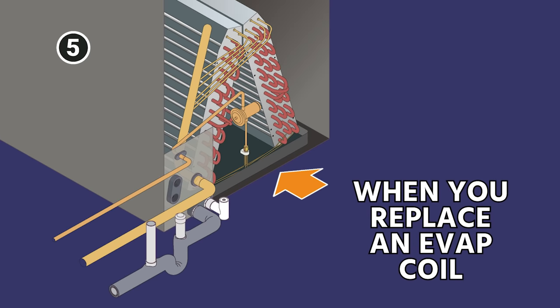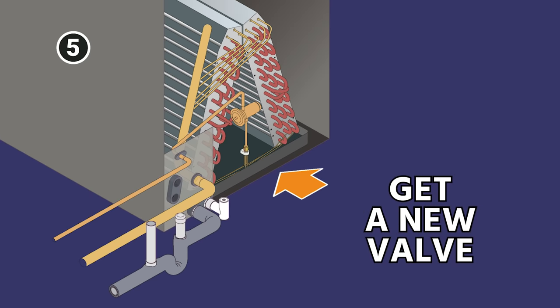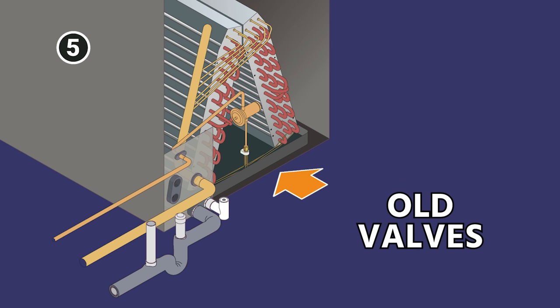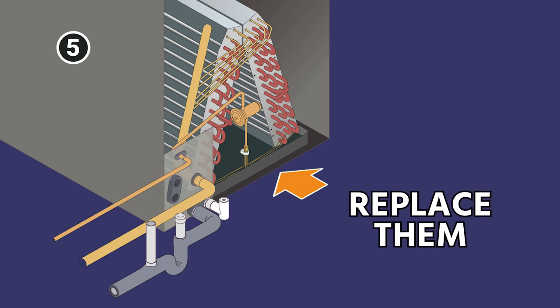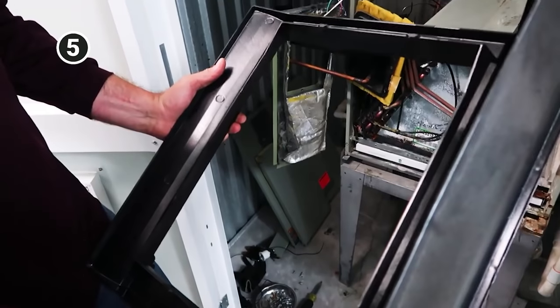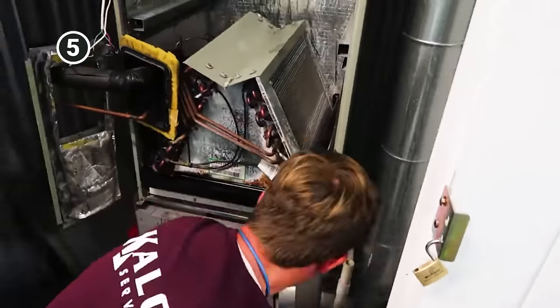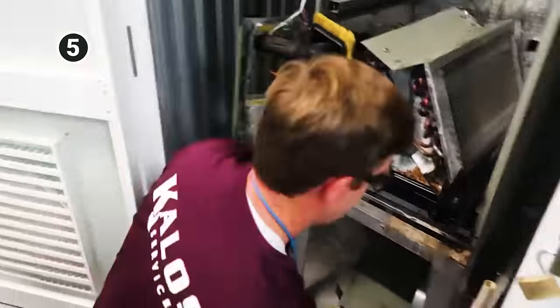I always suggest when you're going to replace an evaporator coil, just go ahead and get a new valve. If it doesn't come with one, it just makes good sense. Handling an old valve and trying to reinstall it, you're often going to break it, so it just makes good sense to go ahead and replace that. If you can replace a new drain pan, that also makes a lot of sense. Some of the most common issues that we see is folks forgetting to get a new drain pan and valve, and then when they try to reinstall them, those break.